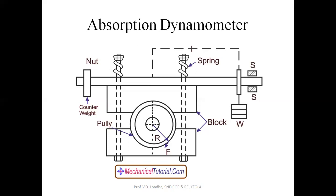The wooden block is in contact with the peripheral surface of the disc, so there will be maximum friction, and if there is maximum friction then there will be maximum heat generation. There will be maximum power loss, and this power loss cannot be utilized for other purposes. So this type of dynamometer is called as absorption type of dynamometer.